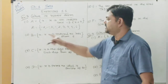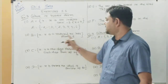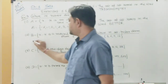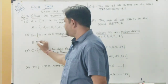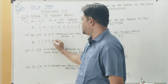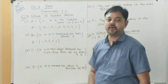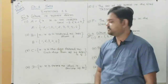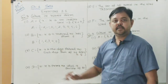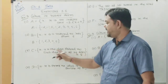The second question: Set B = {x : x is a natural number and less than 6}. That gives us {1, 2, 3, 4, 5}.